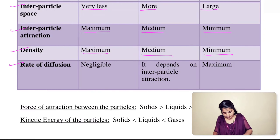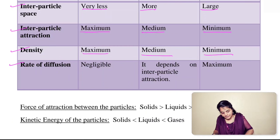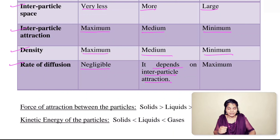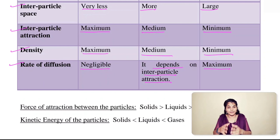Regarding the rate of diffusion: diffusion between solid-solid is very negligible because space between particles is very less. In liquids, diffusion depends on inter-particle attraction — if the attraction is less, diffusion can occur. In gases, diffusion is maximum because particles can move randomly and there is space between them.